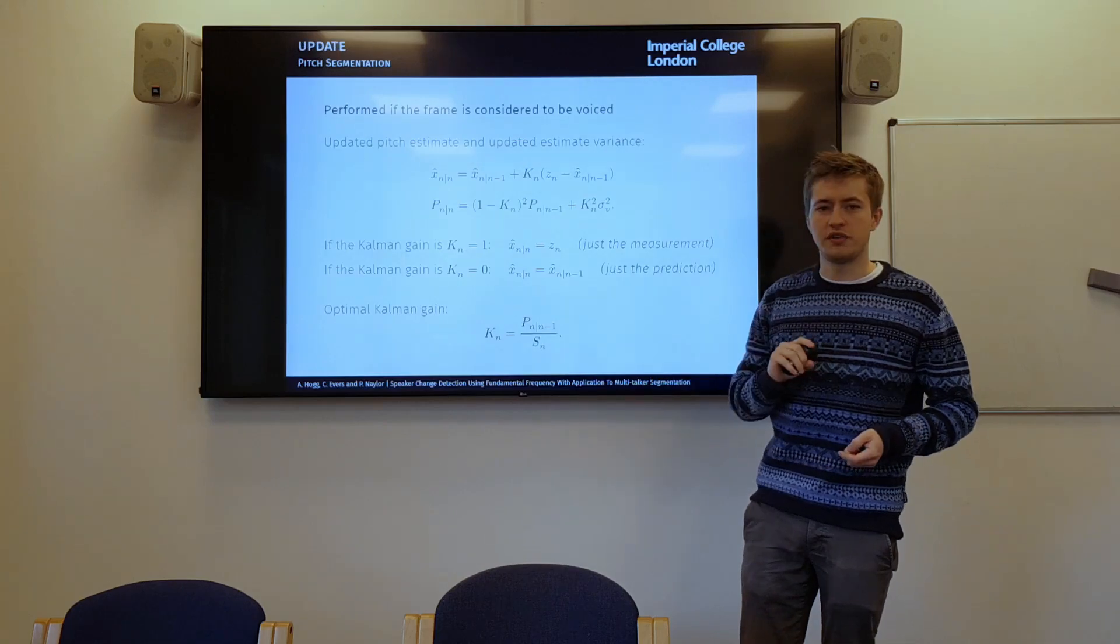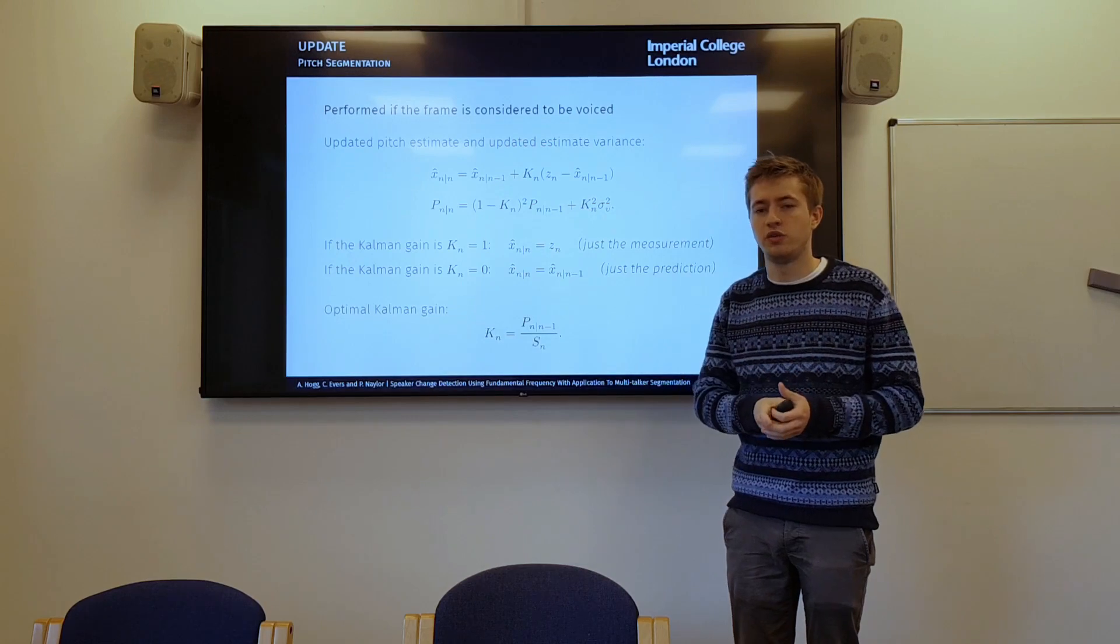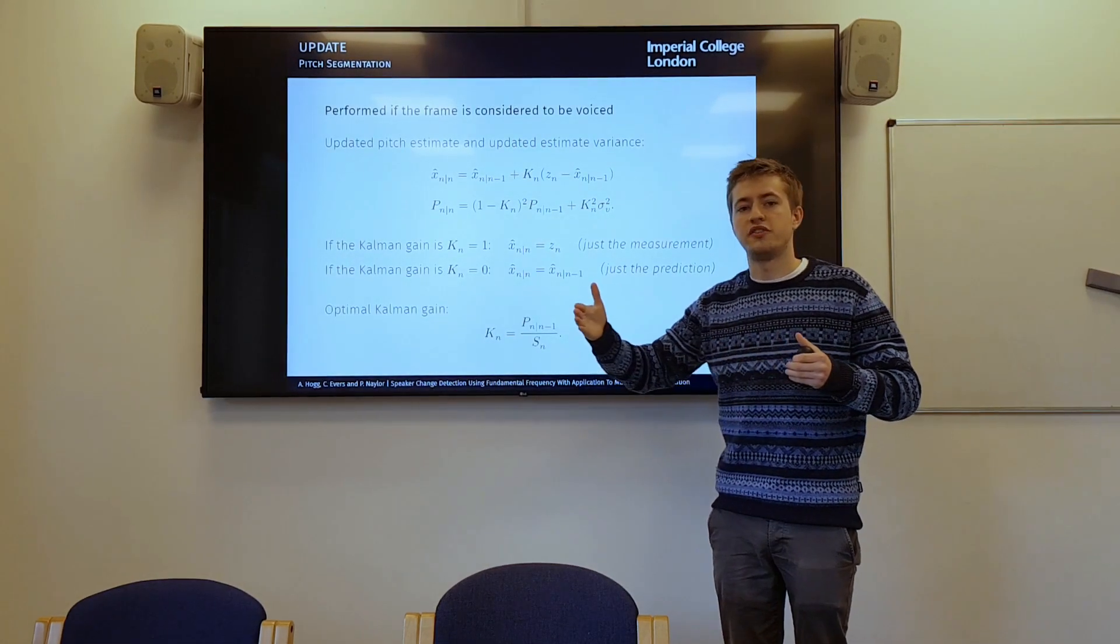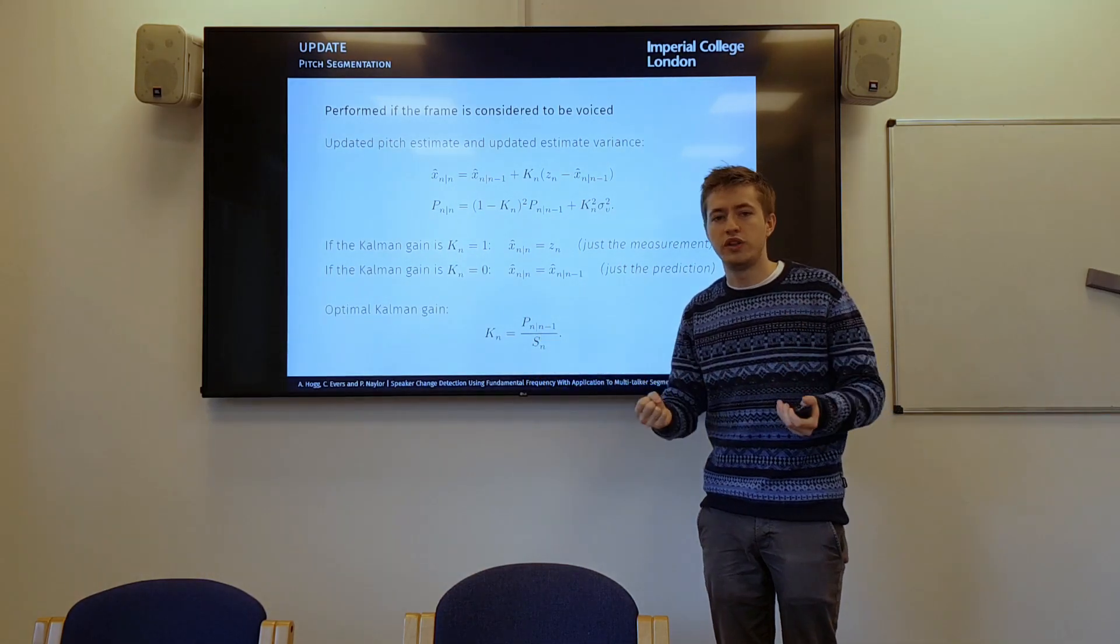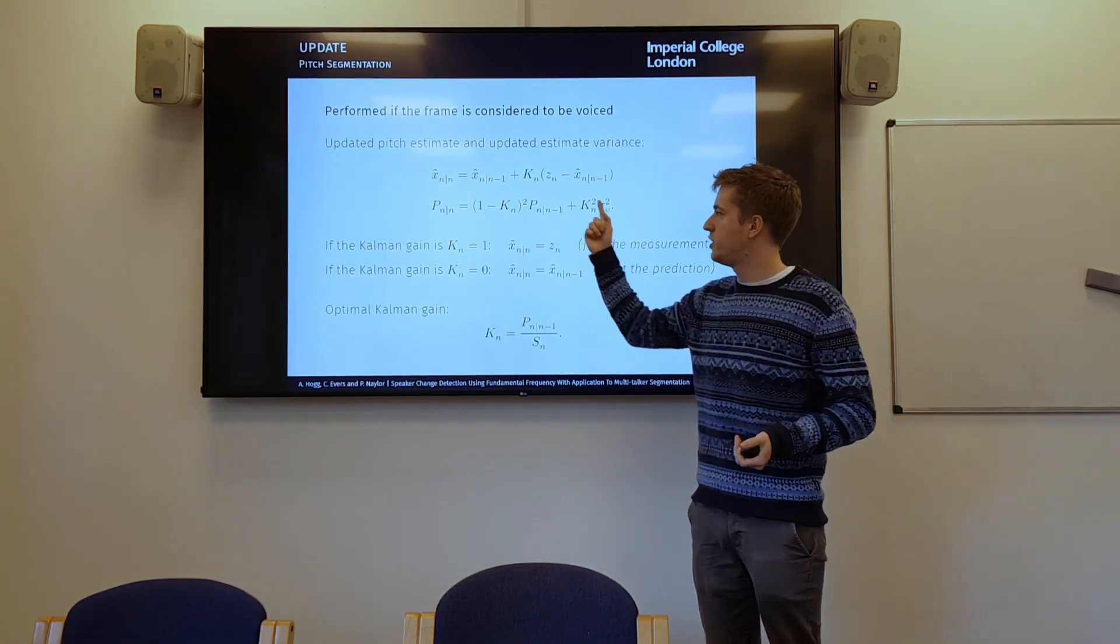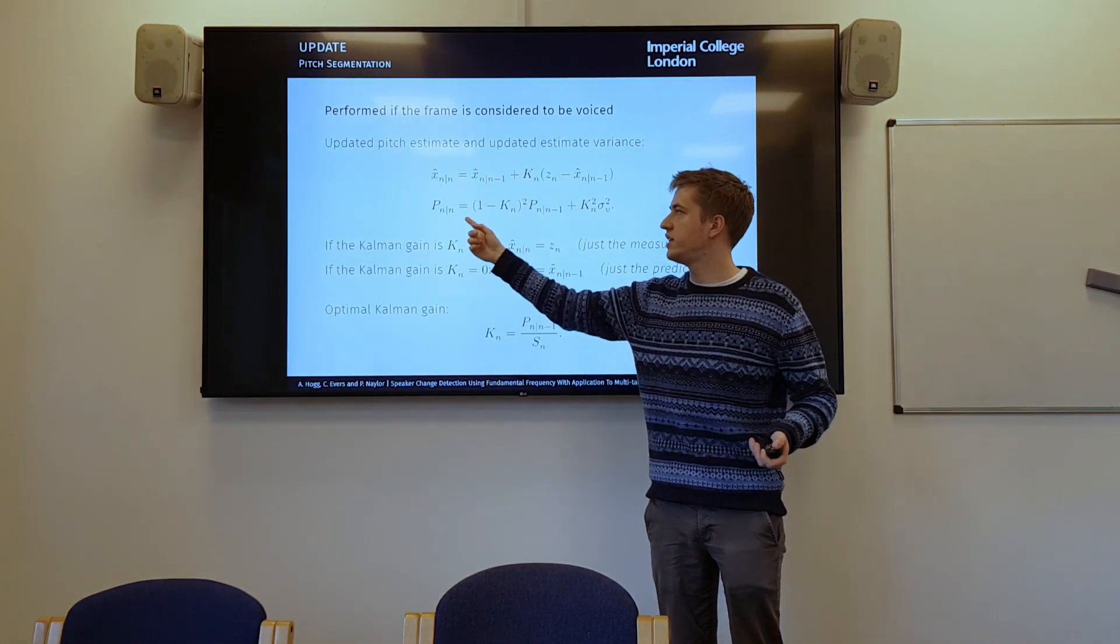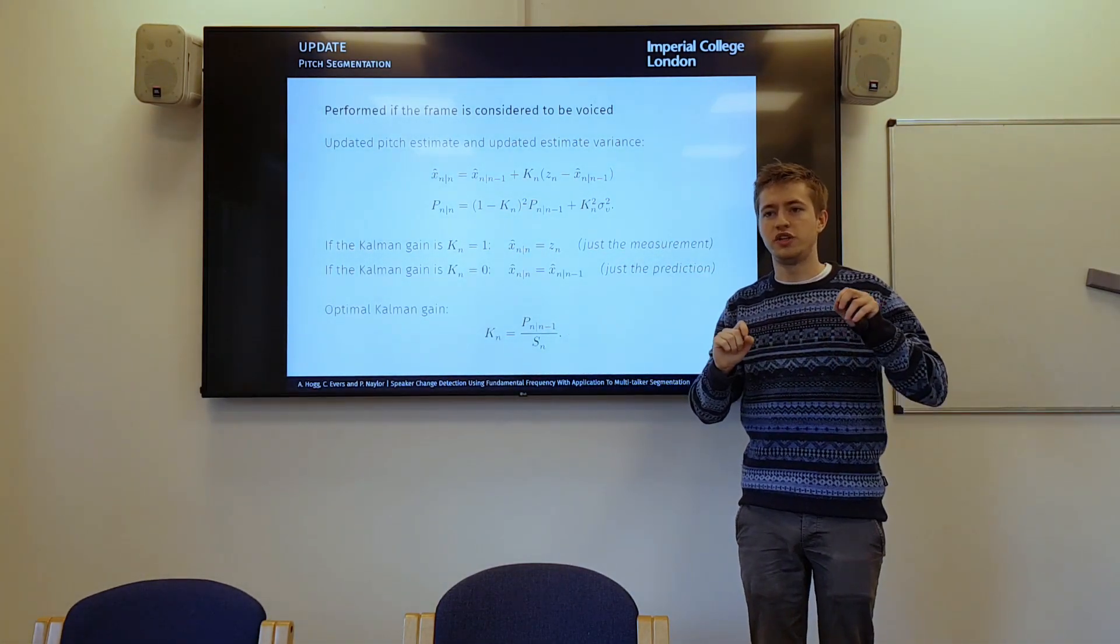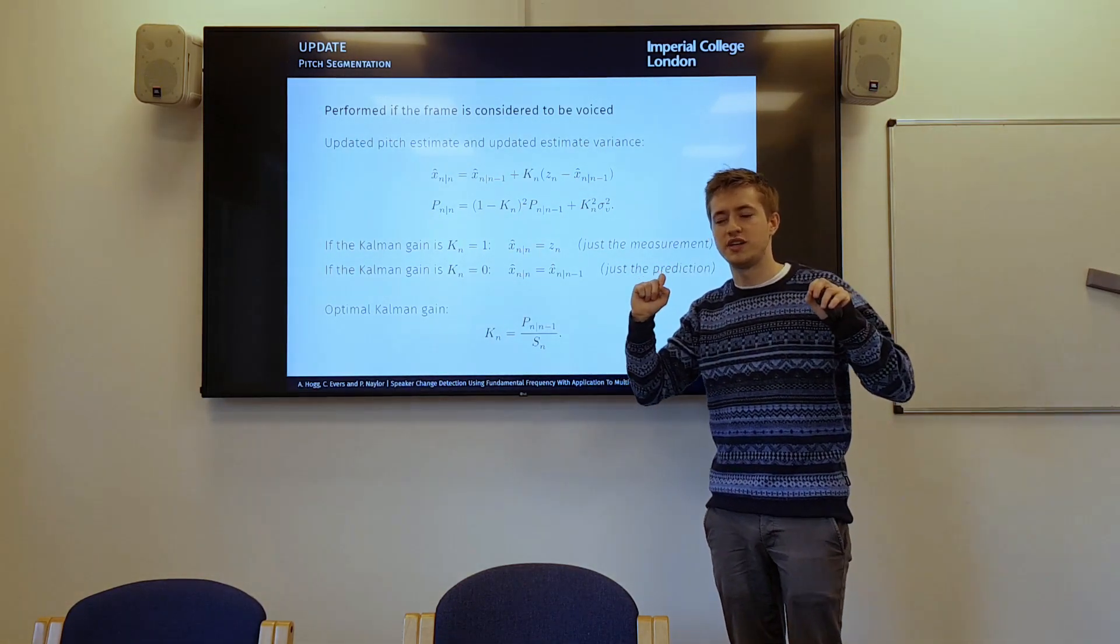However, when we do an update step and we receive a measurement, we want our model to become more accurate because we've seen a measurement. So the more time that passes without seeing a measurement, the less accurate our model becomes. As soon as we see a measurement, we know our model becomes more accurate. So we decrease the variance, which is this equation here. And we also update our prediction. So we don't want to keep our prediction the same. We want to utilize some of that measurement information in our prediction.